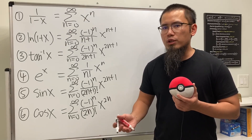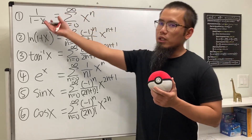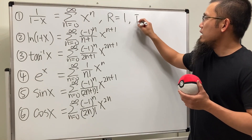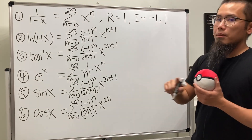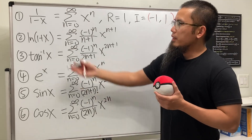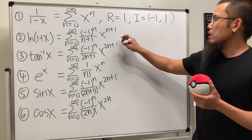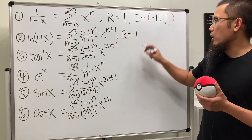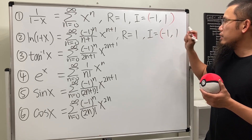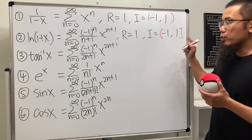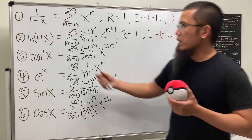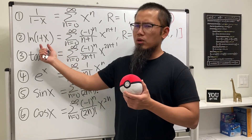Starting with our best friend 1/(1-x), this is the geometric series, so the radius of convergence R is 1 and the interval of convergence goes from negative 1 to 1, not including the endpoints — open parentheses. For natural log of (1+x), R is also equal to 1 and the interval of convergence goes from negative 1 to 1, but we do not include the left endpoint.